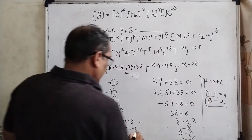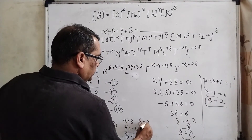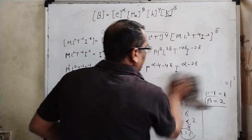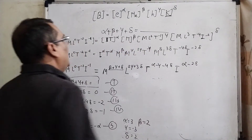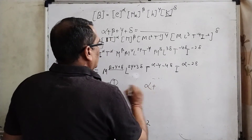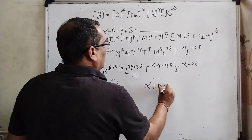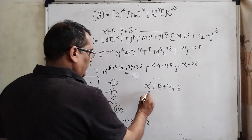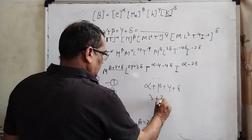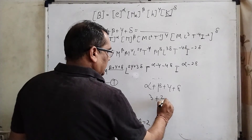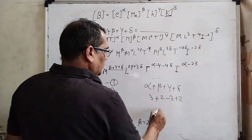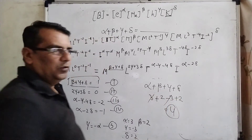So we have all values: α = 3, β = 2, γ = −3, and δ = 2. We have to find α + β + γ + δ = 3 + 2 + (−3) + 2. The 3 and −3 cancel out, leaving 2 + 2 = 4. The correct answer is 4. I hope you understand this question.